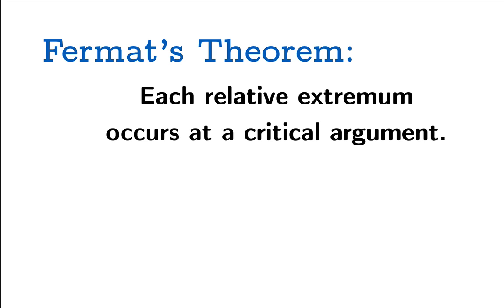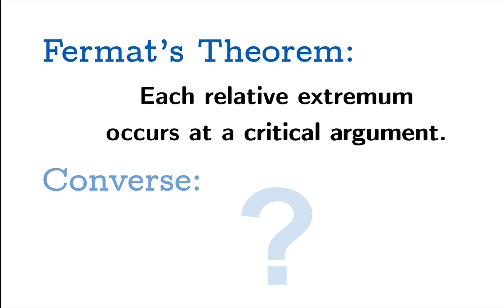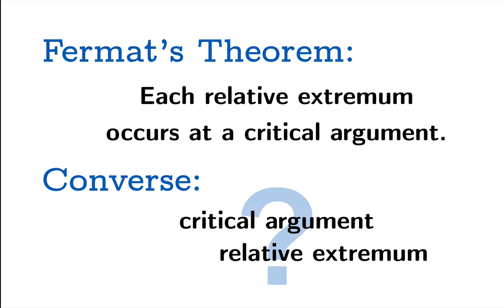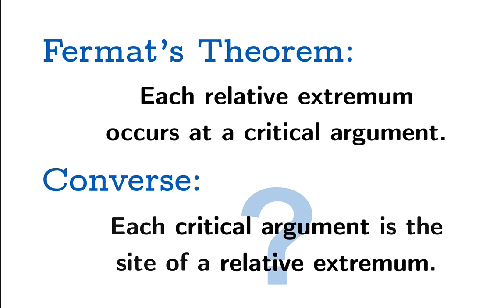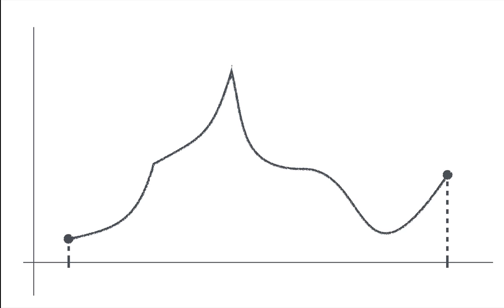Fermat's theorem tells us that each relative extremum occurs at a critical argument. What about the converse of that statement? If we switch the order of the implication: is it true that each critical argument is the site of a relative extremum? You should think about this carefully — you should be able to refute it on your own.